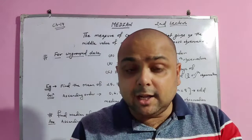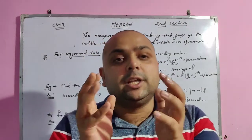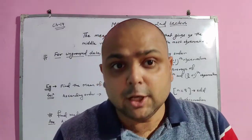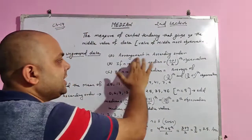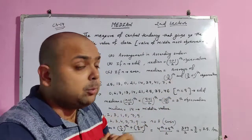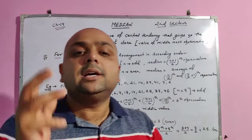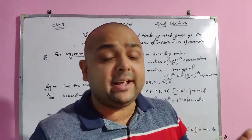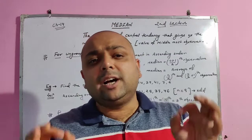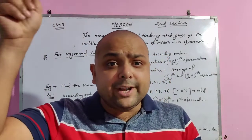This was also studied in ninth standard. For ungrouped data, if the number of observations is odd, median is calculated using the formula: (n+1)/2 th observation. For example, if n is 9, median is the (10/2) = 5th observation. If n is 19, median is the 10th observation. If n is 7, median is the (8/2) = 4th observation.